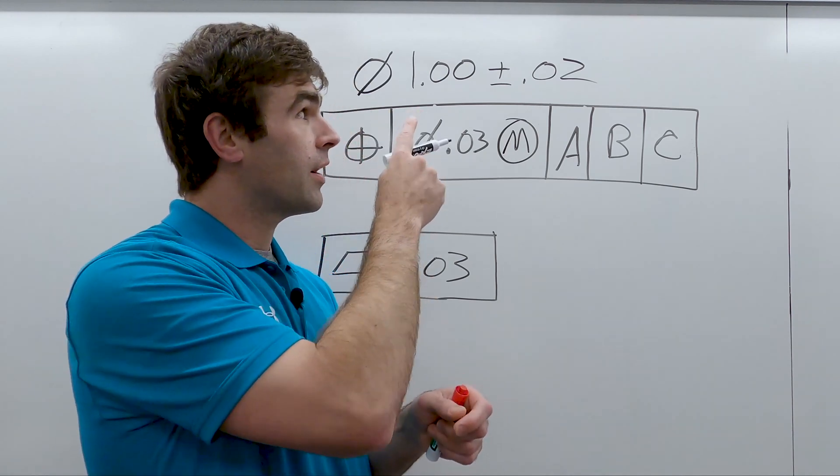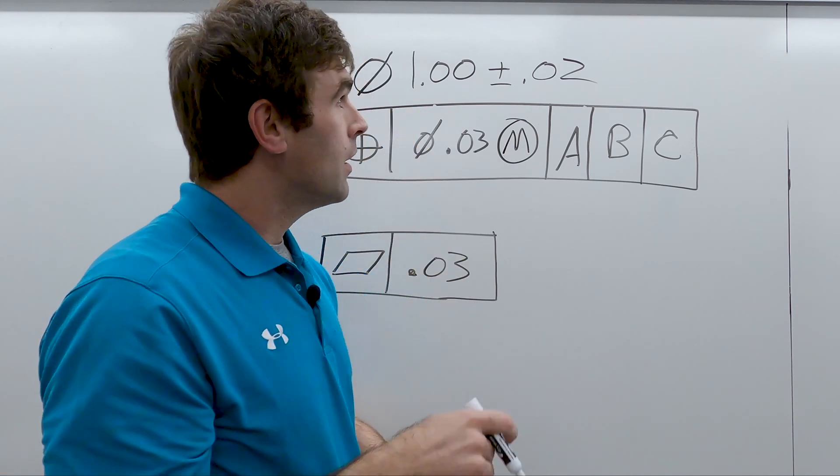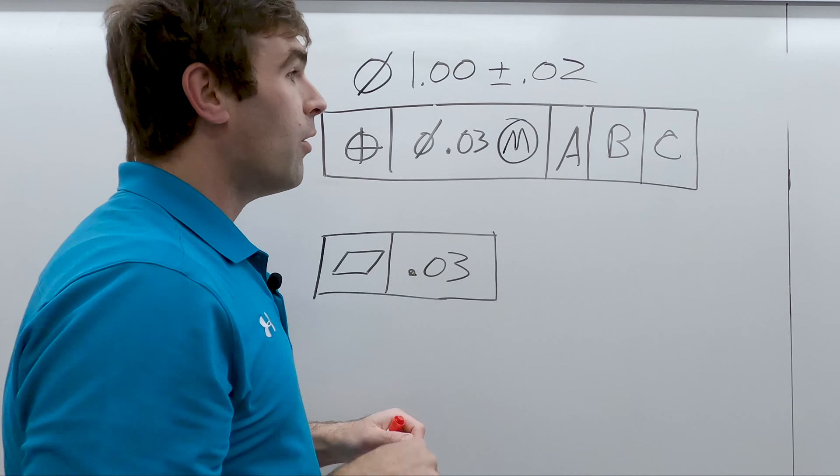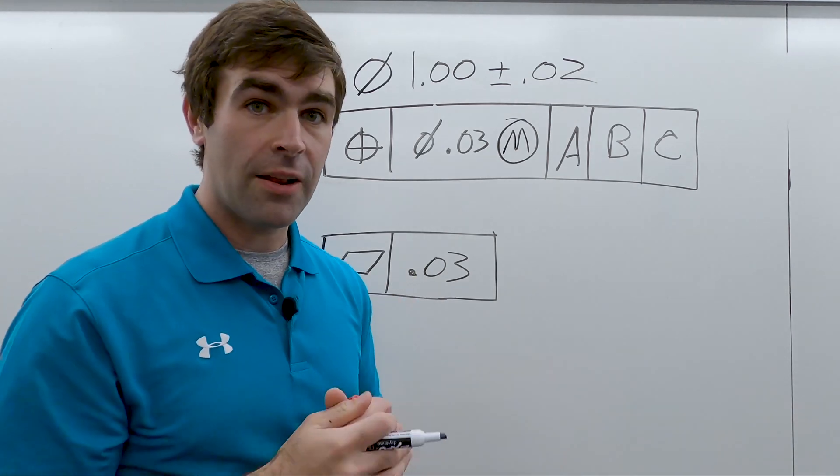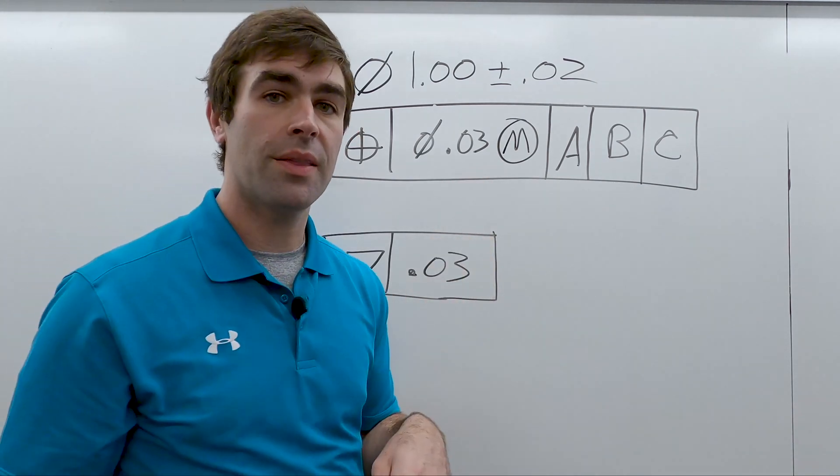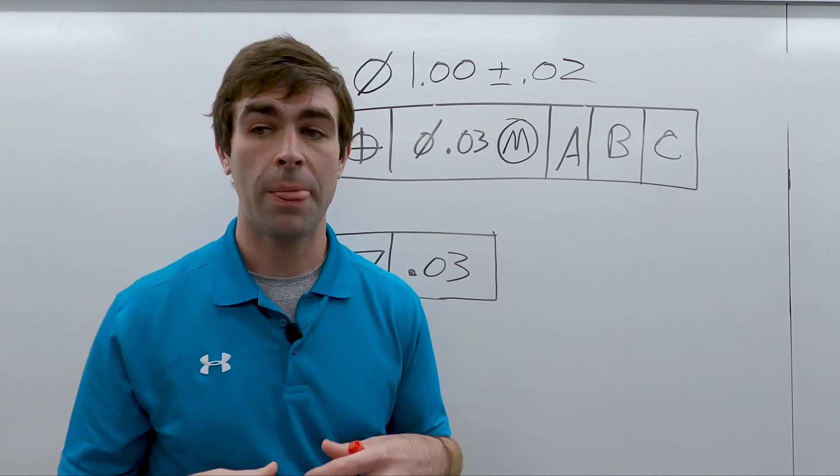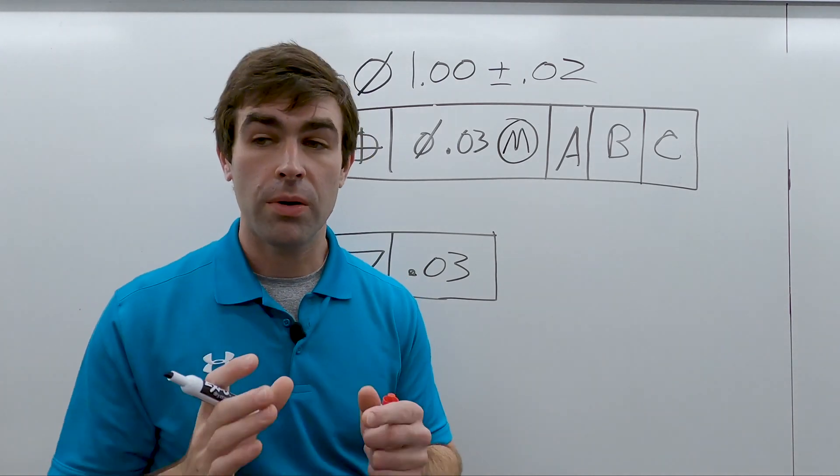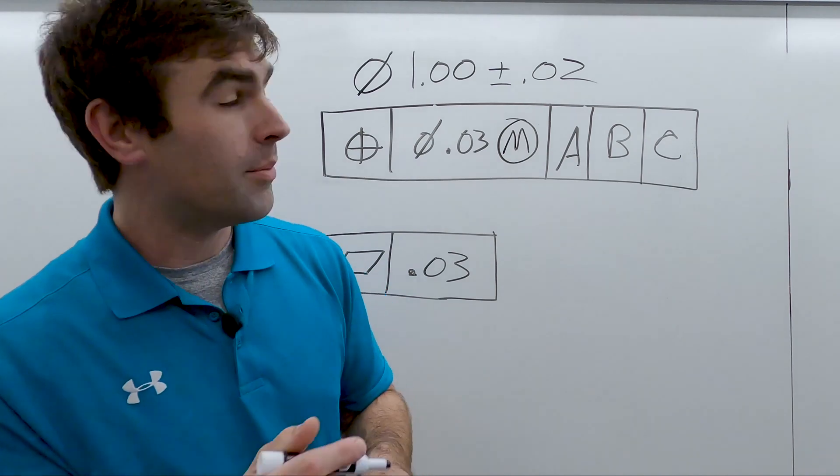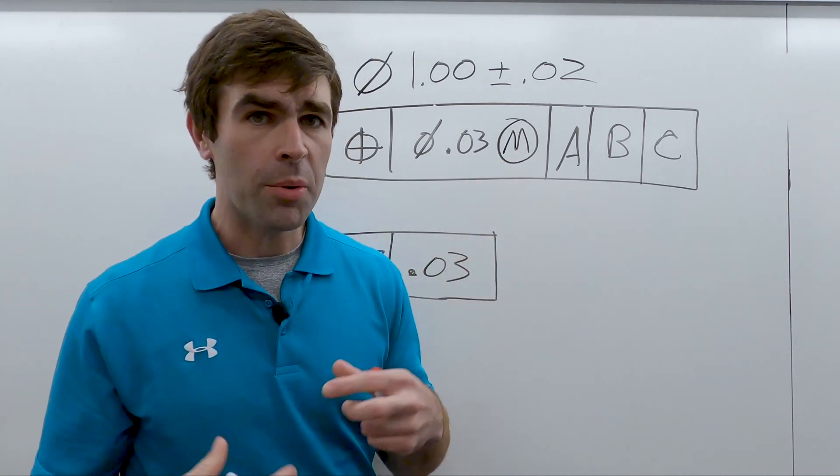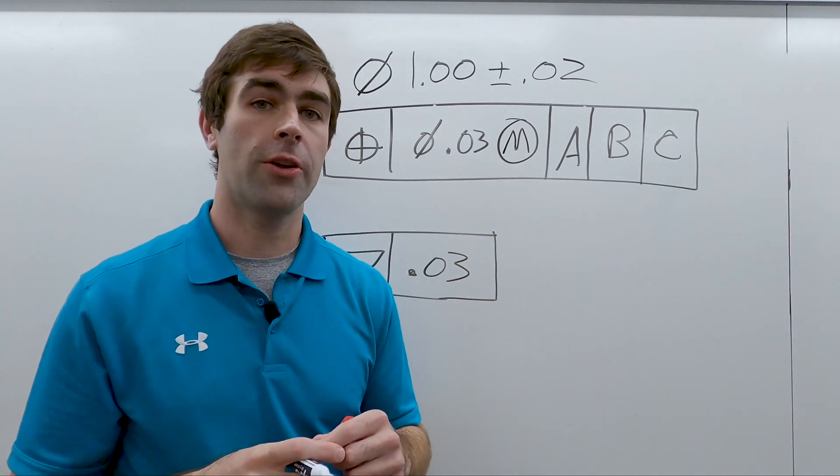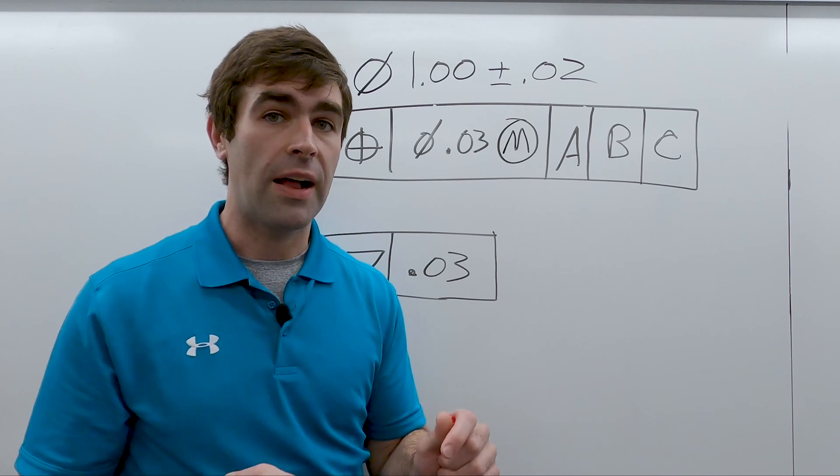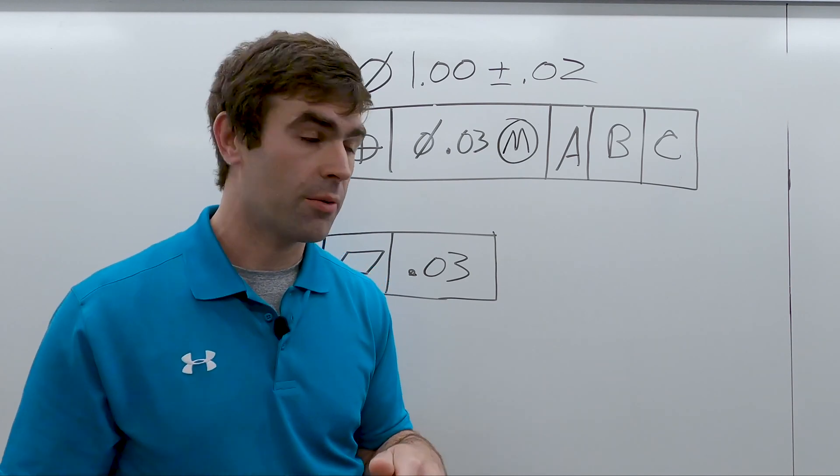So a hole that comes in at 1.02, you got 40 thou of bonus tolerance. Add it to this, you have 70 thou of location tolerance. It's important to know that this MMC is almost always a good thing. It almost always means more tolerance. You just have to think about it.